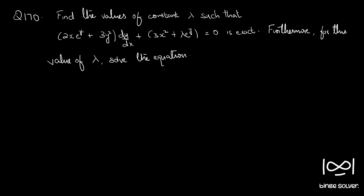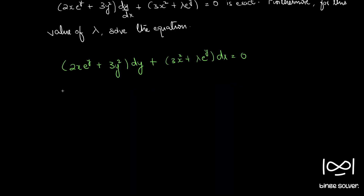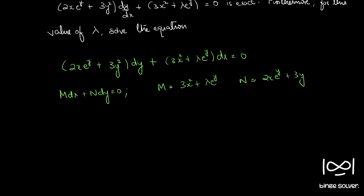First, we rearrange the equation to M dx + N dy form. Therefore, (2x e^y + 3y²) dy + (3x² + λe^y) dx = 0. So this is in M dx + N dy = 0 form, where M = 3x² + λe^y and N = 2xe^y + 3y².